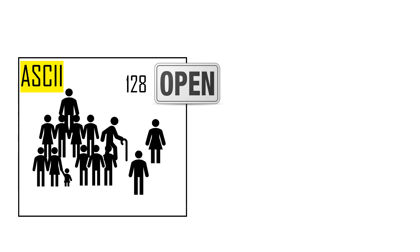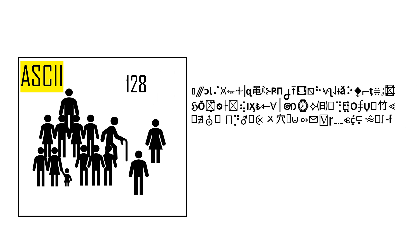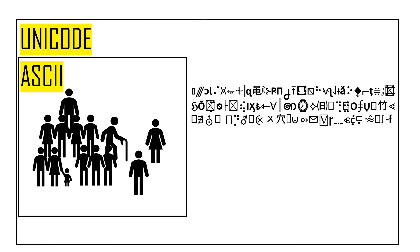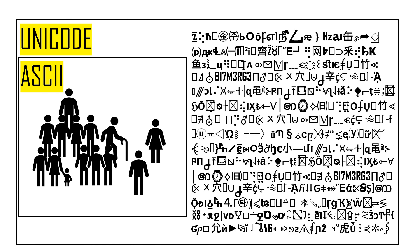Because of this, a large number of mathematical symbols, diacritics, emoji, and the like could not possibly be included. The Unicode standard solves this limitation by allowing for over 1 million code points, a much larger code space than ASCII.